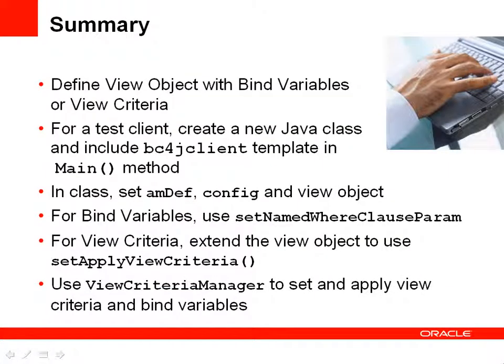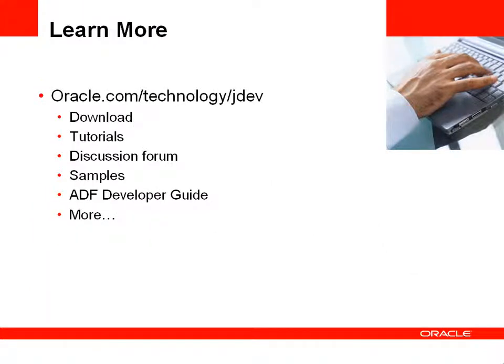In summary, you've defined view objects with bind variables and view criteria. To use a test client, create a Java class and include the BC4J client template in the main method. Set all the variables for the application module and view object. If you're using bind variables, use setNamedWhereClauseParam. If you're using view criteria, extend the view object and use setApplyViewCriteria — the view criteria manager sets and applies the criteria and bind variables for that VO. To learn more, check out oracle.com/technology/jdev where you can find downloads, tutorials, discussion forums, samples, the developer's guide, and much more.